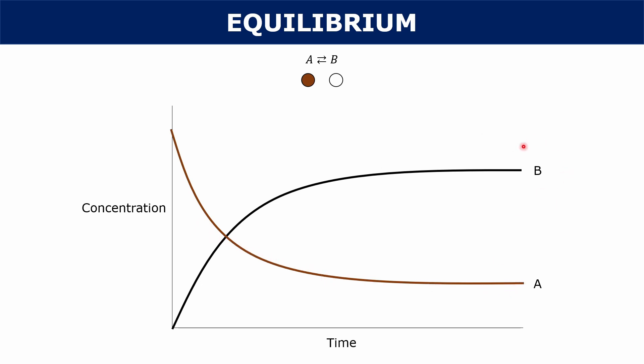On the other hand, for B, the concentration goes up and eventually starts to stabilize. Where do you think the reaction has reached equilibrium? It would be around the point where the concentrations of A and B have started to stabilize.